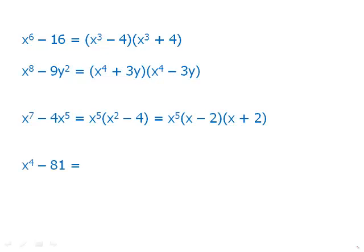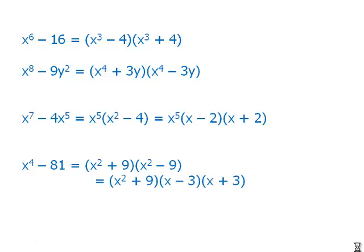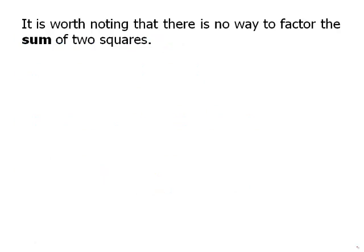Here's another: x to the 4th minus 81. Since x to the 4th is x squared squared, a equals x squared and b equals 9. This factors into x squared plus 9 times x squared minus 9. But x squared minus 9 is another difference of squares, so we factor again: x squared plus 9 times x minus 3 times x plus 3. That is the fully factored form. Note that x squared plus 9 is a sum of squares, and there is no way to factor a sum of two squares in algebra.